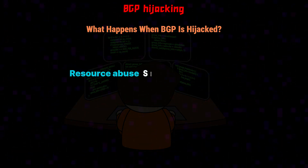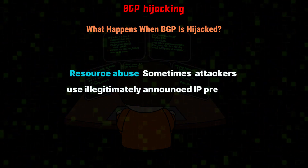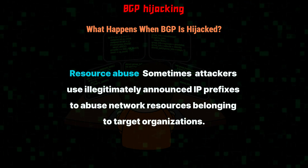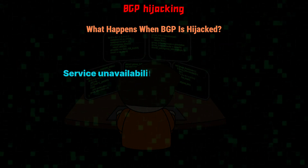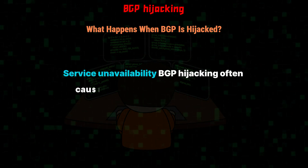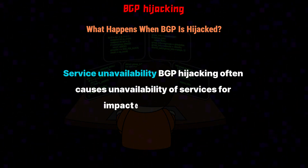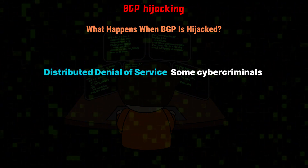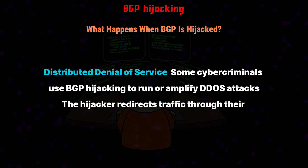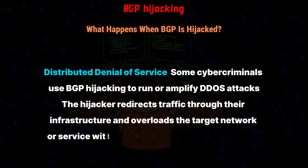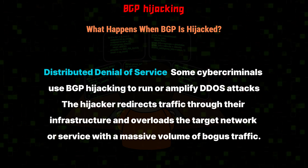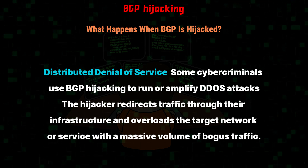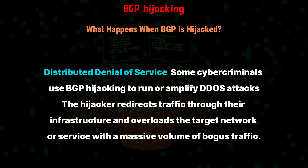Resource abuse: sometimes attackers use illegitimately announced IP prefixes to abuse network resources belonging to target organizations. Service unavailability: BGP hijacking often causes unavailability of services for impacted IP addresses. Distributed denial-of-service: some cybercriminals use BGP hijacking to run or amplify DDoS attacks. The hijacker redirects traffic through their infrastructure and overloads the target network or service with a massive volume of bogus traffic.